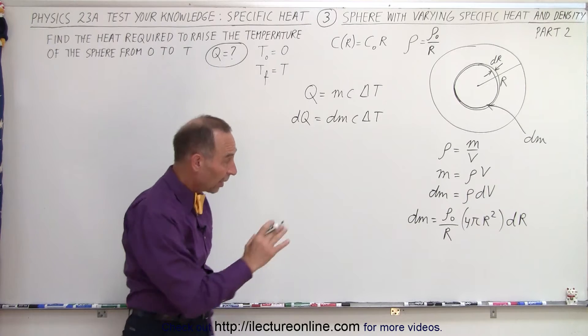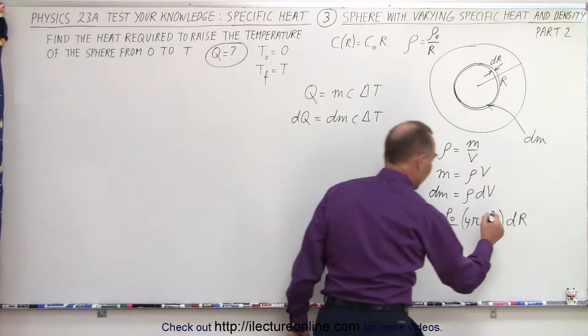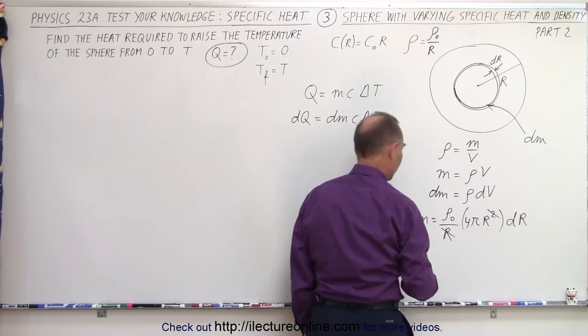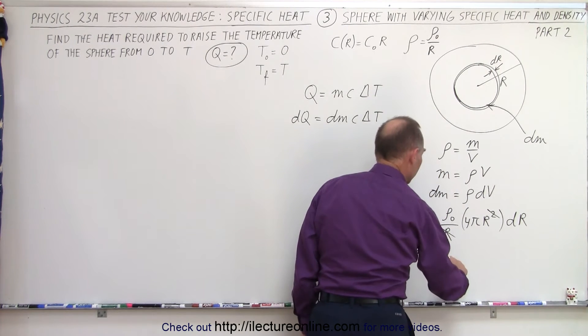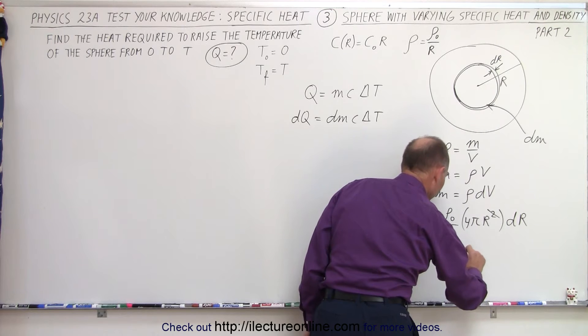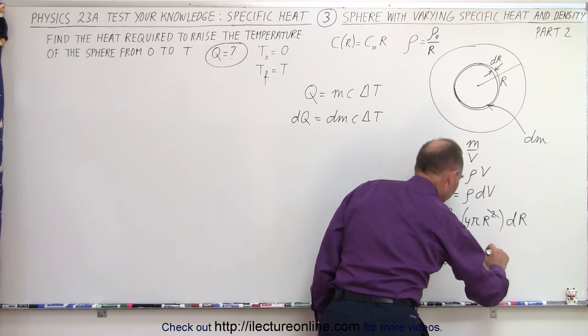So now notice that the r squared dr, we can cancel this with this. And so now we can write that dm is equal to the density constant times 4 pi r dr.